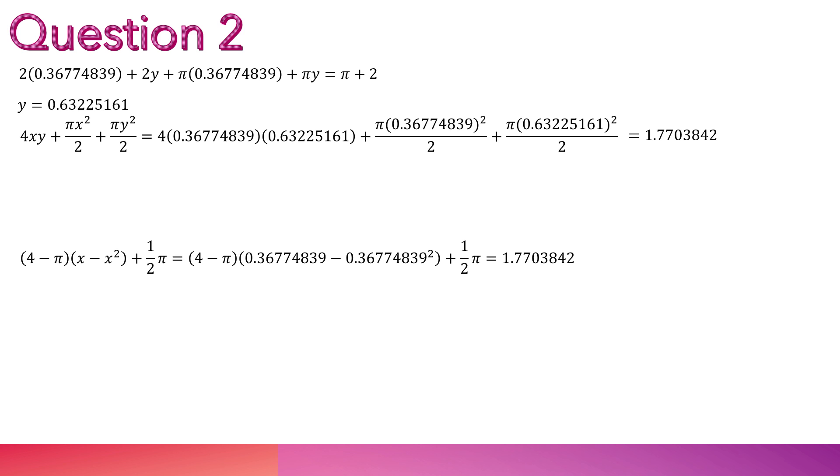And then we do the same way, but with the area they gave us in the question: 4 minus pi x minus x squared plus half pi. Substitute the x. And we get this. And they are both the same. So this is the proof.